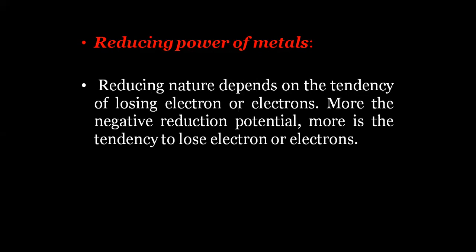The next application is reducing power of metals. If a metal can give electrons easily, it will be a more powerful reducing agent. A metal gives electrons easily when it has a negative or low reduction potential. Lower the value of reduction potential, more easily the electron can be given, so it acts as a better reducing agent. At the bottom of the electrochemical series, lithium has the lowest reduction potential, meaning lithium acts as the best reducing agent — it has the highest reducing power.